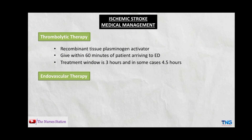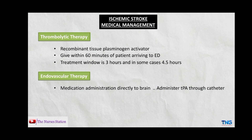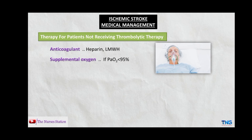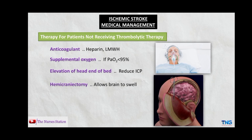Endovascular therapy involves administering medication directly to the brain via catheter, delivering tPA at the site of the clot, or removing the clot with a stent retriever. For patients not receiving thrombolytic therapy, management includes anticoagulants like heparin or low molecular weight heparin, supplemental oxygen if oxygen saturation drops below 95%, elevation of the head end of the bed to reduce intracranial pressure, hemicraniectomy — removing a large flap of skull and opening the dura to allow the brain to swell and reduce intracranial pressure — intubation to establish a patent airway if necessary, and frequent neurologic assessments.